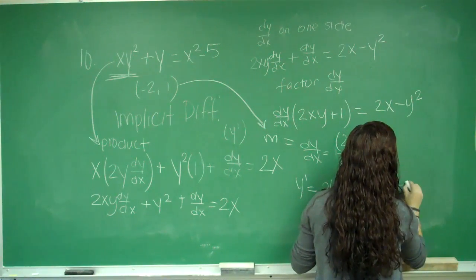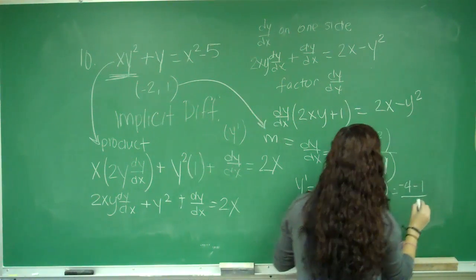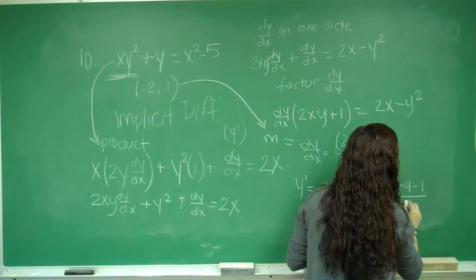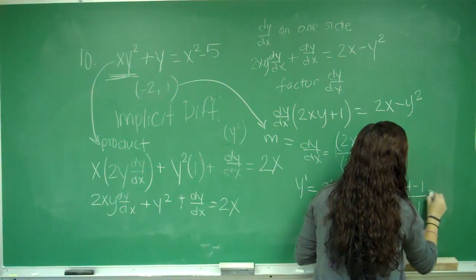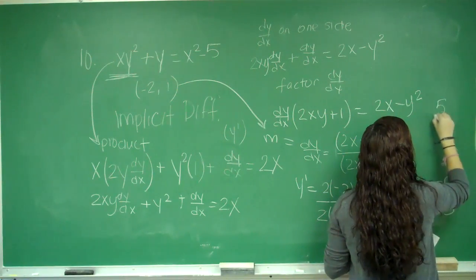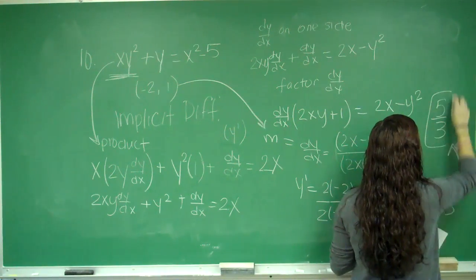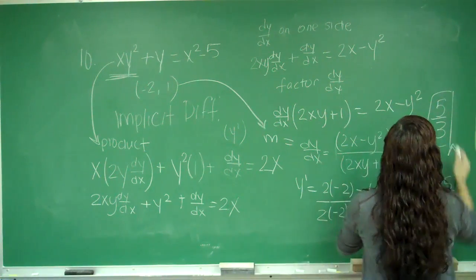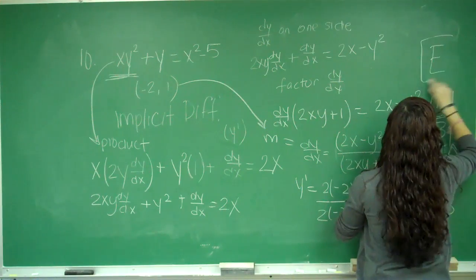So I have -4 minus 1, over -4 plus 1, which is -5 over -3, which is 5/3. And this is choice E.